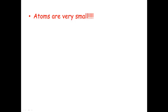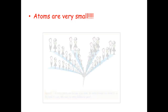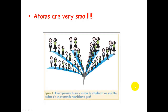Atoms are very, very, very small. I love this diagram here which says that if every person was the size of an atom, the entire human race would fit on the head of a pin and there'd be room left for billions more people. That's how small atoms are.